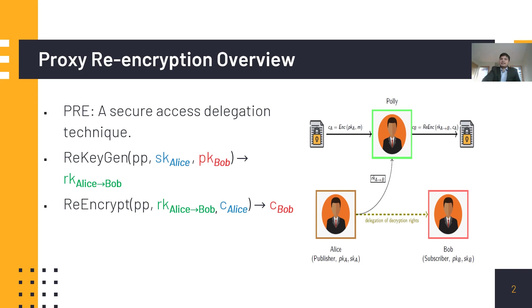The diagram on the right shows one round of message exchange powered by PRE. We have two users, Alice and Bob, who are interested in exchanging information through a proxy server referred to as the proxy. The re-encryption key is stored with the brokering party or proxy server. When the message from Alice arrives at the proxy server, it transforms the ciphertext using the re-encryption key RK so that it can be read by Bob.